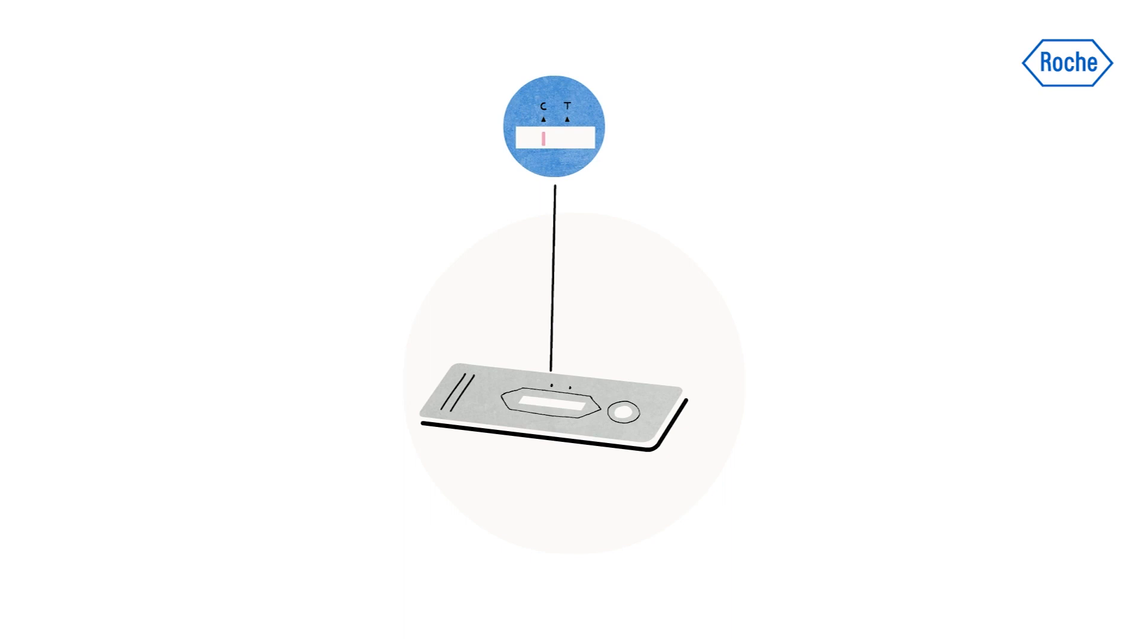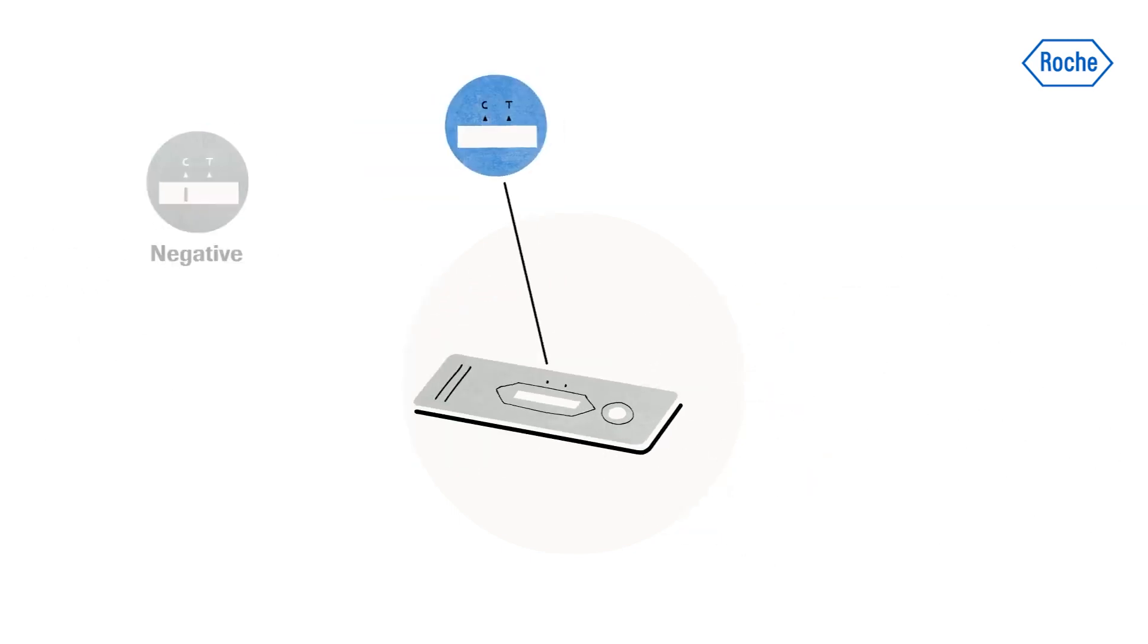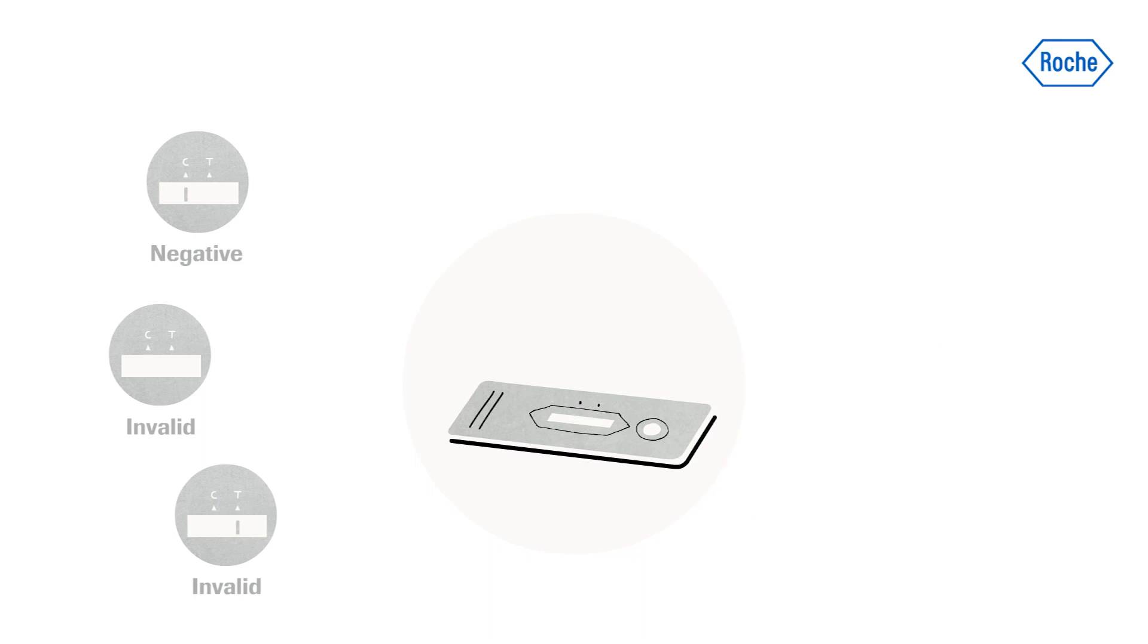If the control line C is the only visible line, the test is negative. If no control line C is visible, the result is always invalid and the test should be repeated using a new device.